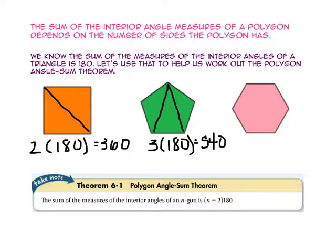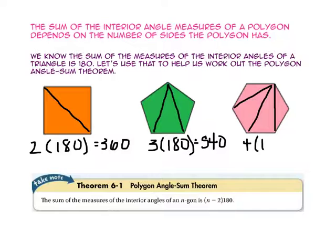The pink hexagon can be divided into four triangles with three diagonals. So the sum of the interior angles of the hexagon is 4 times 180, or 720.